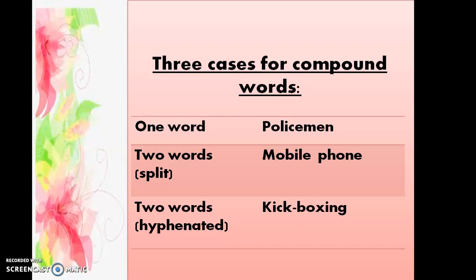في عنا ثلاث حالات compound words الكلمات المركبة. One: one word — مثل policeman، دمج الكلمتين بنتج عنه كلمة واحدة. Or two words split — يعني كلمتين منفصلتين مثل mobile phone، بينهم space. Or two words hyphenated — يعني كلمتين بربط بينهم رابط داش، مثل cake-boxing.